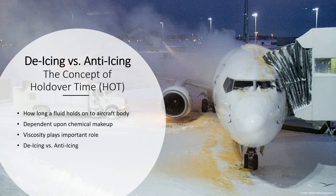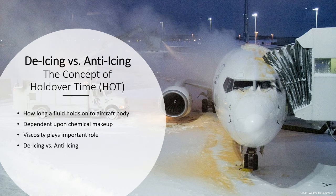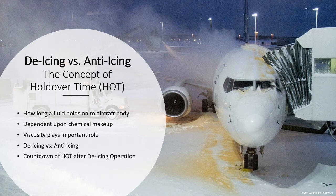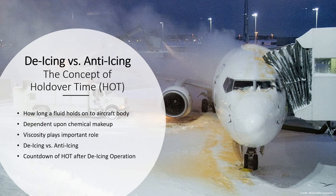De-icing fluids have shorter hold over time. They melt and remove the layer of ice already formed over the aircraft body, but they don't prevent buildup of ice again because they don't remain on the aircraft body for much longer. Anti-icing fluids have longer hold over time — they remain on the aircraft body and make a layer over it such that water does not have any place to remain on the aircraft. No water means no ice. After a de-icing operation is performed, the hold over time of the fluid used is conveyed to the pilots, who keep a record of time passed since the operation. For example, if the hold over time of the fluid is 20 minutes, pilots have to fly the aircraft before 20 minutes expire. If they are unable to do that, the de-icing operation will have to be performed again.